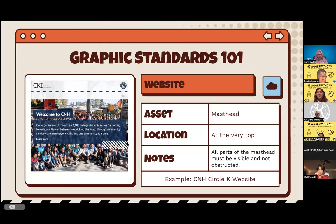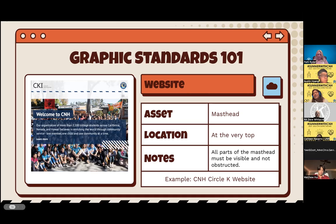Moving on to websites. There are graphic standards if your club is planning on building a website. The asset you'll utilize is the masthead, placed at the very top. All parts of the masthead must be visible and not obstructed. Here's an example of the CNH Circle K website.